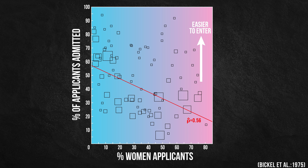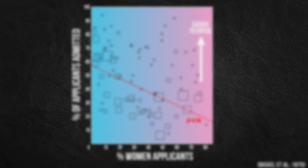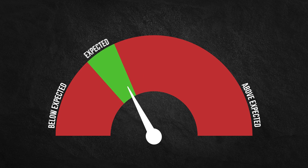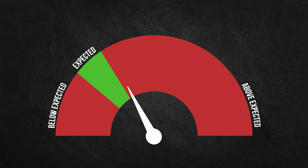This inhomogeneous distribution explains the trend reversal observed when the separated datasets were aggregated. When this one factor was taken into account, they concluded that women had a higher-than-expected acceptance rate. Therefore, there was a bias in favor of women.